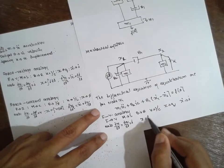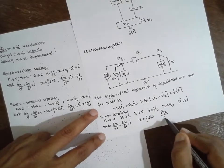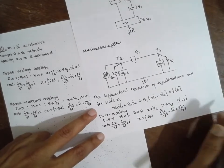X is equal to integration of I DT. D square X by DT square is equal to X double dot, which equals DI by DT.